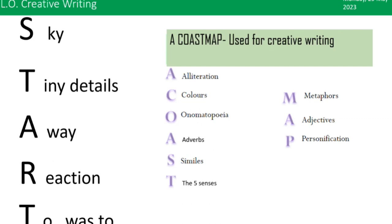A coast map reminds you what to put in each paragraph. So when you get your example, I would do, for the first five minutes, plan what you're going to put in the sky paragraph, then in the tiny details paragraph. For example, for sky, I'm going to put an adverb — 'duplicitously' — and similes about the moon. In the tiny details paragraph, I'm going to write personification and use the five sentences. That's my first five minutes: planning what I'm going to put into each section.